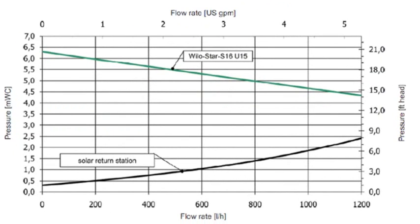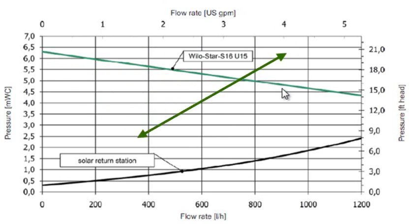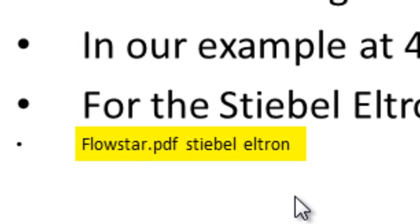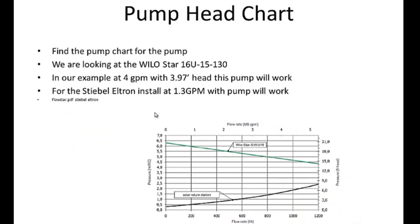I pulled up the Stiebel Eltran pump — the Wilo Star pump in the Stiebel Eltran system. Looking at their flow rate chart with gallons per minute on top and pressure on the side: if our worked example was at 4 gallons per minute with a head pressure of 3.97 feet, I go to 4 gallons per minute and see that I need to overcome about 4 feet of head. The green line tells me this pump will be more than enough to handle it. The Stiebel Eltran will work as low as 1.3 gallons per minute, which it was ideally cut for. That's how we calculate the pump sizing.